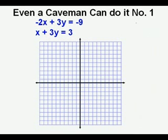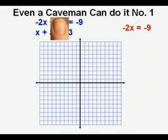Og graphs the first equation by covering the y term with his newly evolved opposable thumb. He is left with -2x = -9. He solves for the x-intercept by dividing by -2, so -9 divided by -2 is 4.5. He now marks 4.5 on the x-axis as the x-intercept.